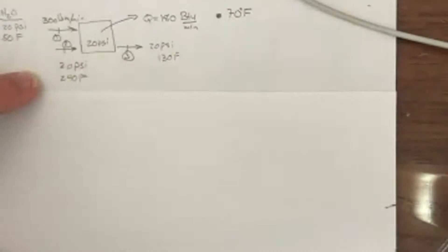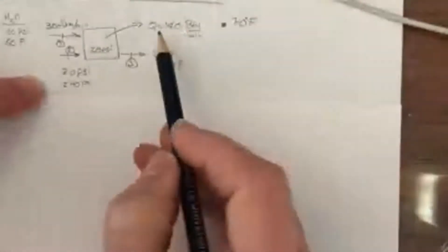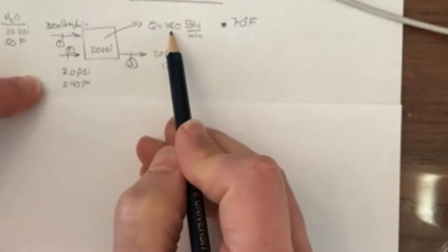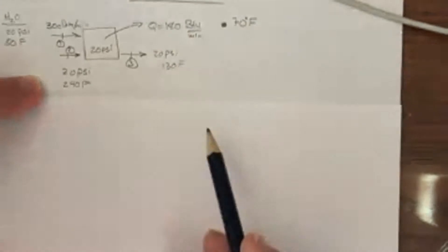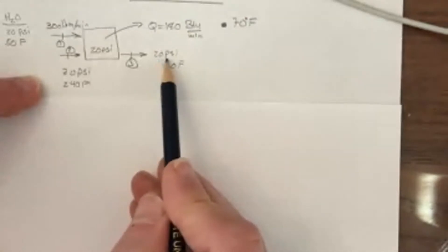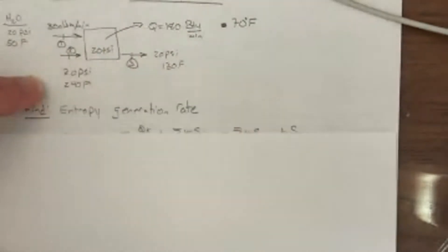This could be like a manufacturing process or a cooking process. There's some heat escaping, 180 BTUs per minute, escaping to the environment which is at 70 degrees Fahrenheit, and the exit stream is 20 psi and 130 degrees Fahrenheit.